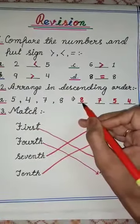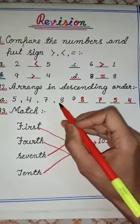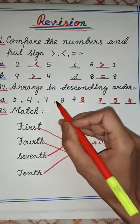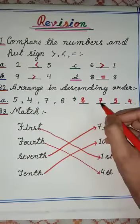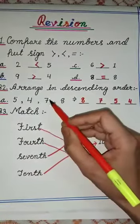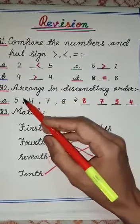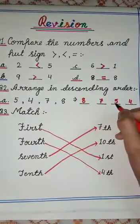So on first place we will write 8. Then the number which is smaller than 8 is this one, 7. So we have written here 7. Then the number smaller than 7 is 5. So we will write here 5.